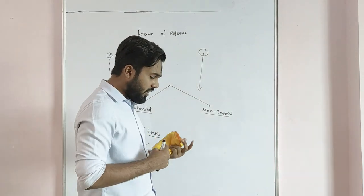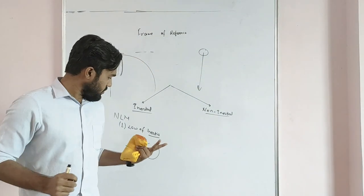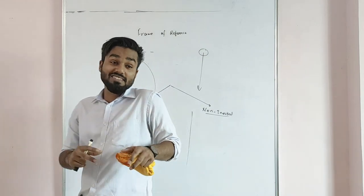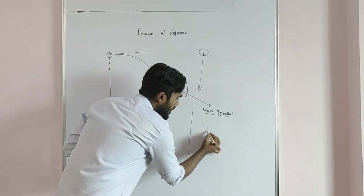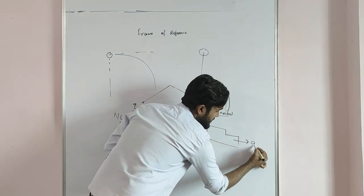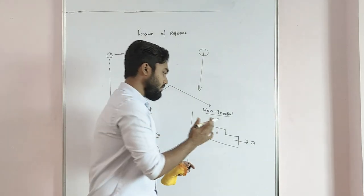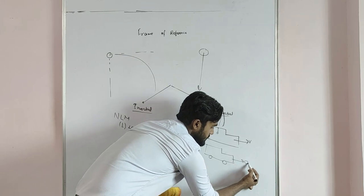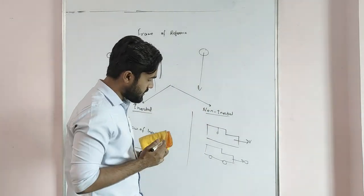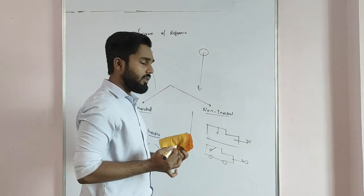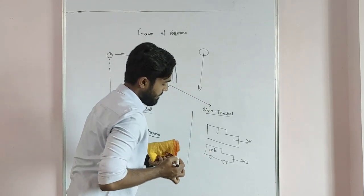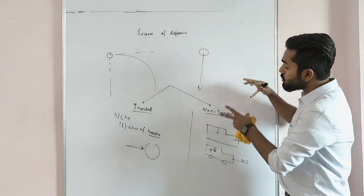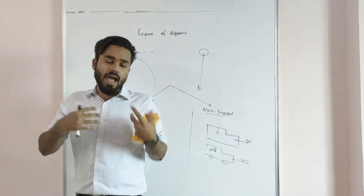Inertial frame is the frame in which all the laws of motion — Newton's laws of motion — are valid. Non-inertial frame is the frame which is accelerating, and in which the laws of motion do not follow unless some extra concept is applied. For example, a vehicle is accelerating. I have kept a pendulum. When the vehicle accelerates at a constant acceleration, this pendulum will automatically go to some angle theta. For me observing from a distant place, it will be like magic — without any visible force the pendulum is at an angle. But in physics, we call it pseudo-force. Pseudo-force helps us to convert a non-inertial frame to an inertial frame of reference and apply all the laws of motion.